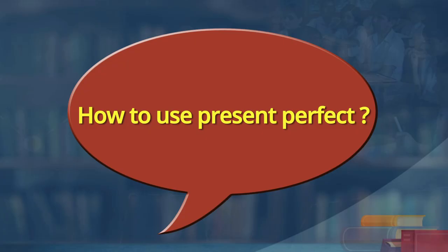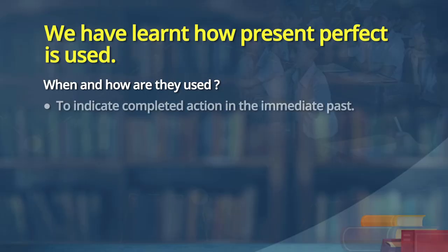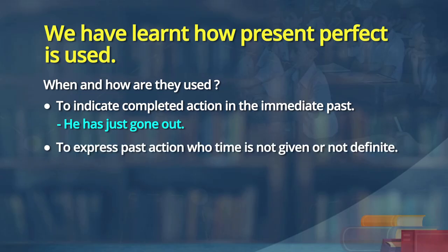What are the occasions present perfect is used? There are four occasions. The first is to indicate a completed action in the immediate past — for example, 'He has just gone out' or 'I have just arrived.' The second occasion is to express a past action whose time is not given or not definite — a past action has taken place but the exact time is not defined.